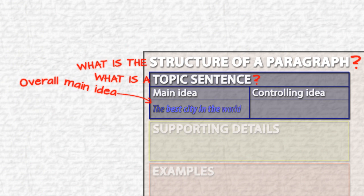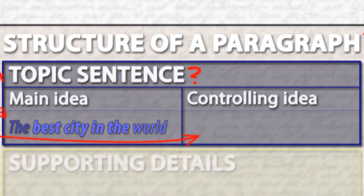The controlling idea is the direction or roadmap for your paragraph. This lets you or your reader know exactly what will be talked about in the paragraph.